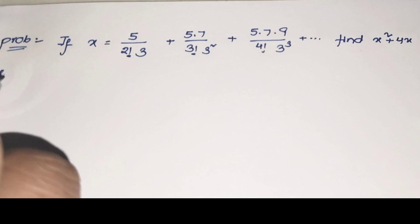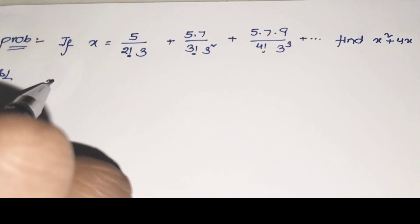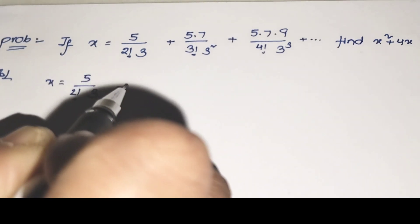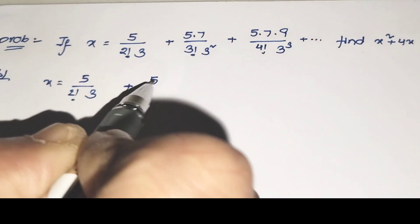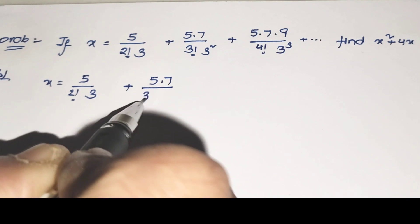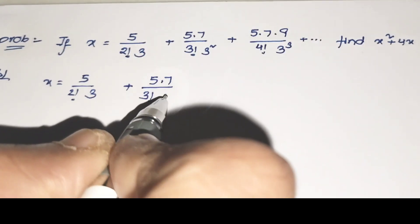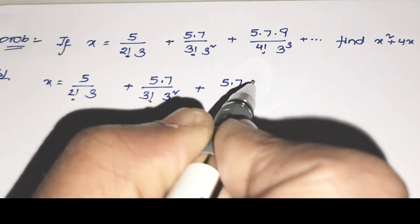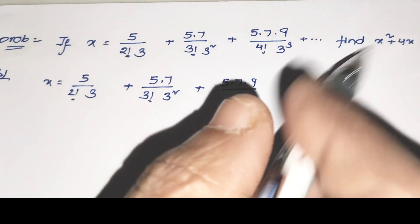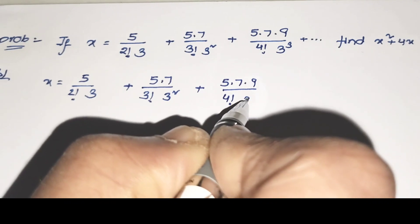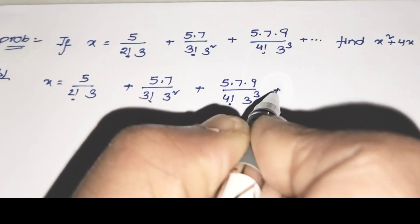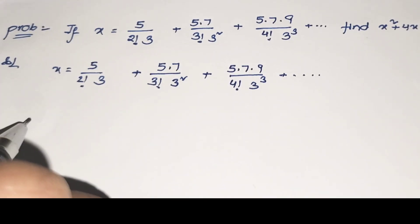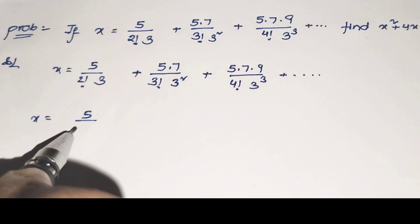Let's start the class. This is the given series. Given that x is equal to this value, you have to find the value of x squared plus 4x. This is the same model as the last video, where I explained how to find the value of 3x squared plus an index. This is also the same process. When we have x squared or 3x squared in the given question, we have to apply a squaring process to the last answer.